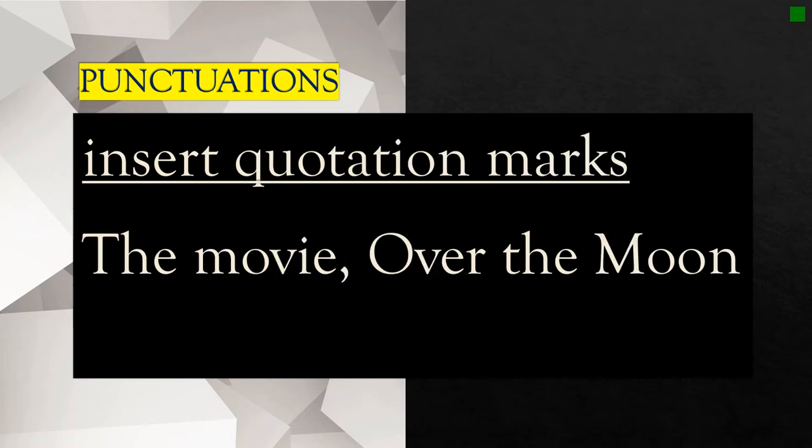Next, we have quotation marks. Here you have this example, the movie Over the Moon. Meaning Over the Moon is the title of a movie and you'd like to enclose this in double quotation marks. All you have to do is draw the double quotation marks and the close quotation marks, and insert.